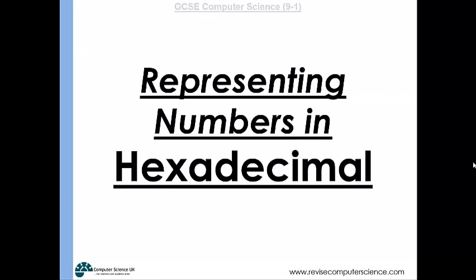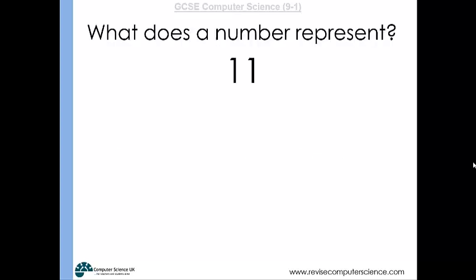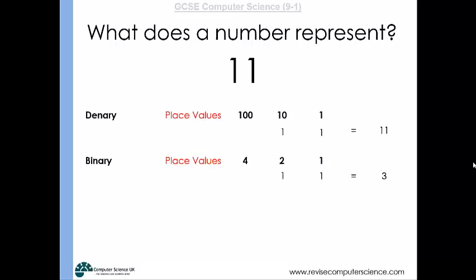The number system they thought up was the hexadecimal number system. Just like when we looked at binary, remember that when you look at a number you shouldn't just see 11 as 11 — you should see it as representing the value 11 in the denary number system, because the one on the left represents a 10 and the one on the right represents how many ones. So 11 is a representation of the number 11.